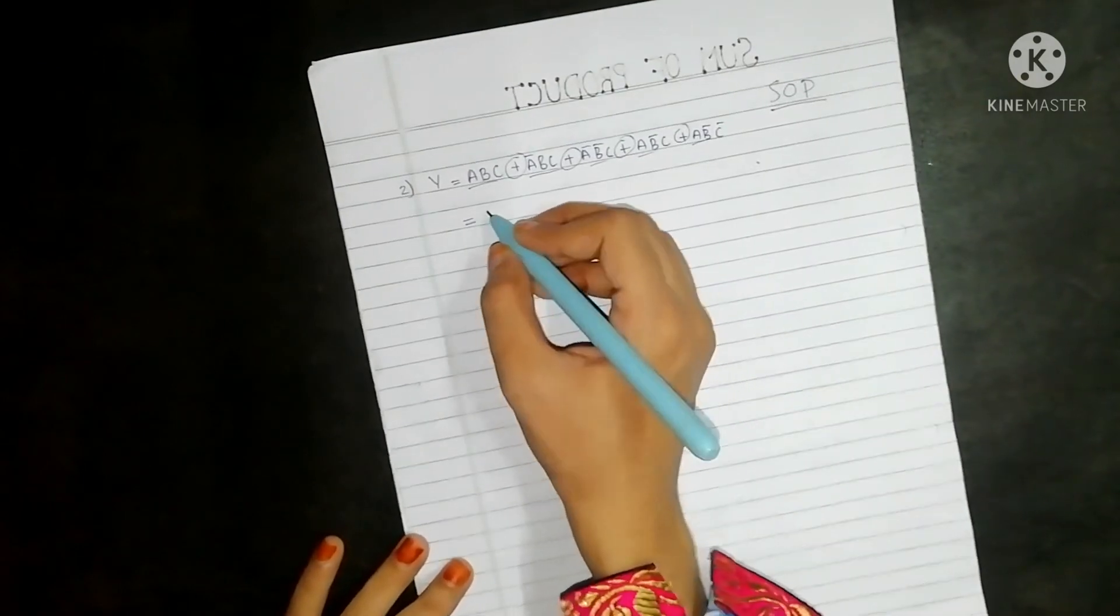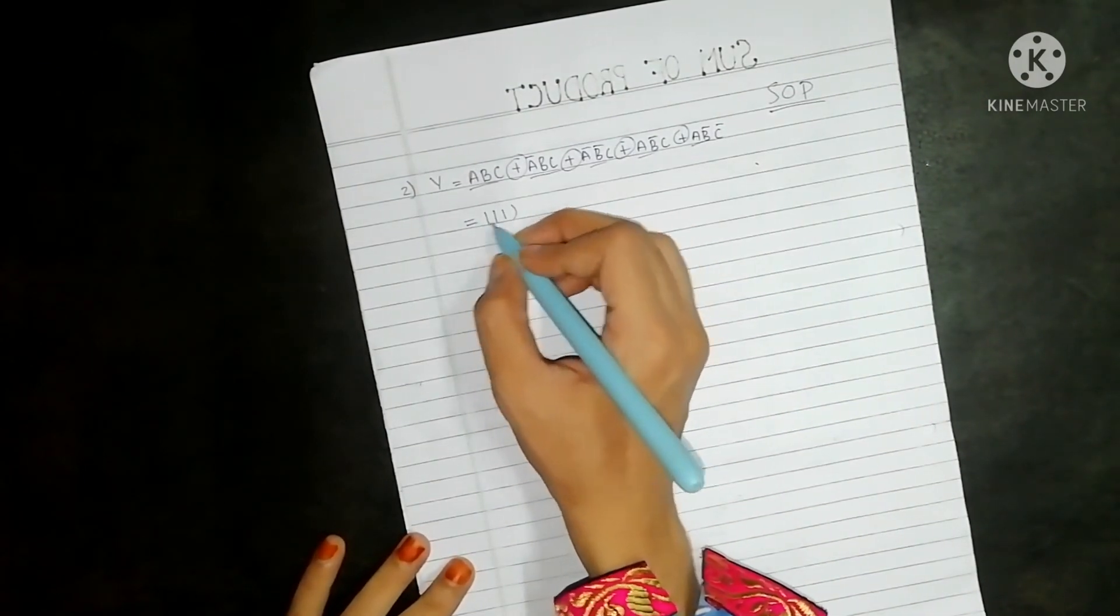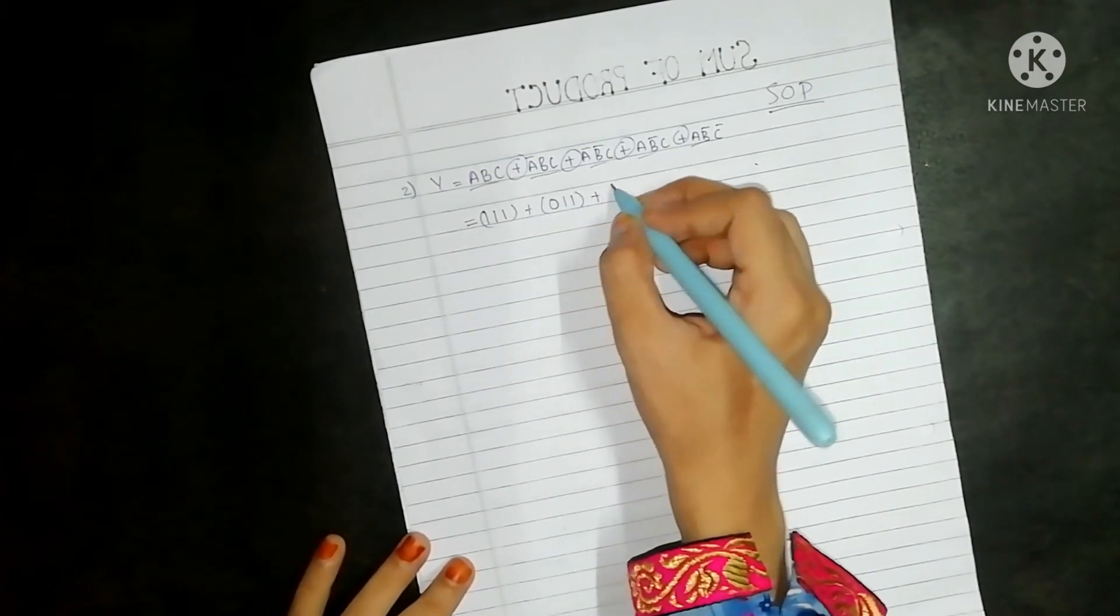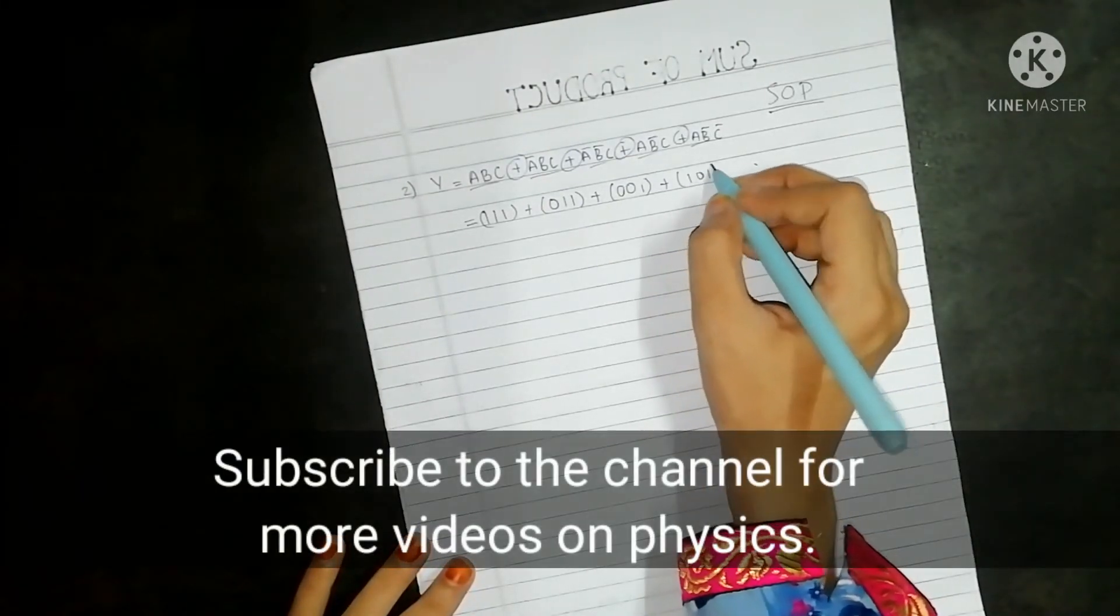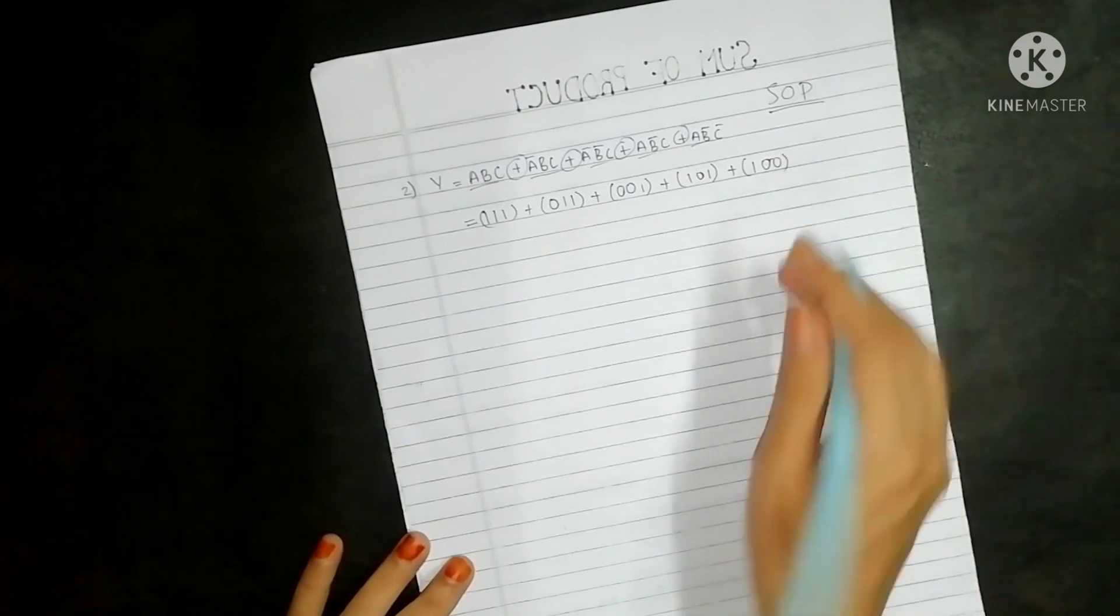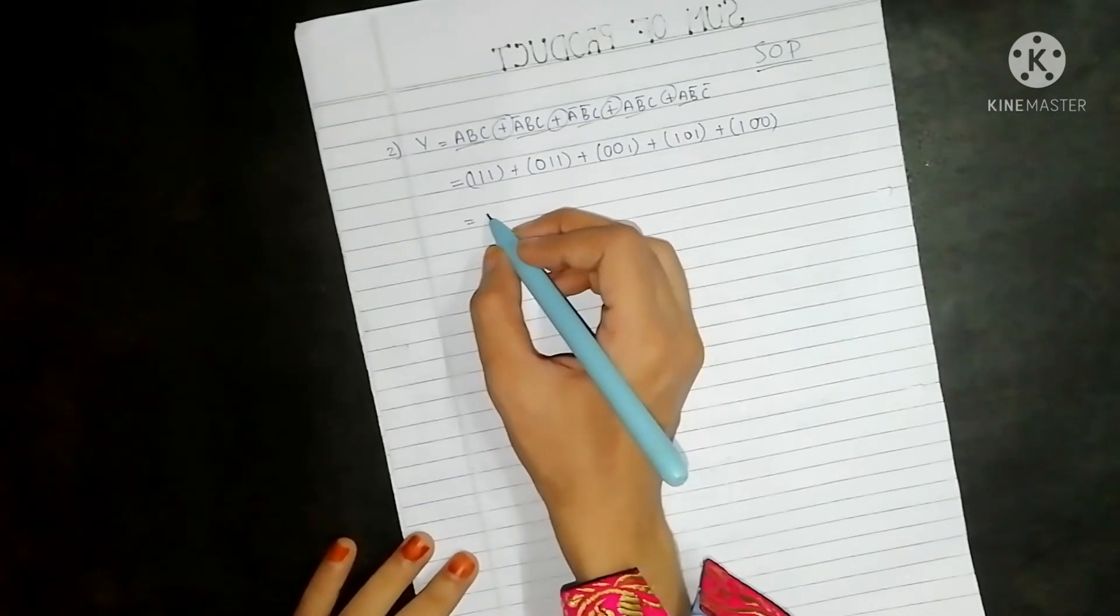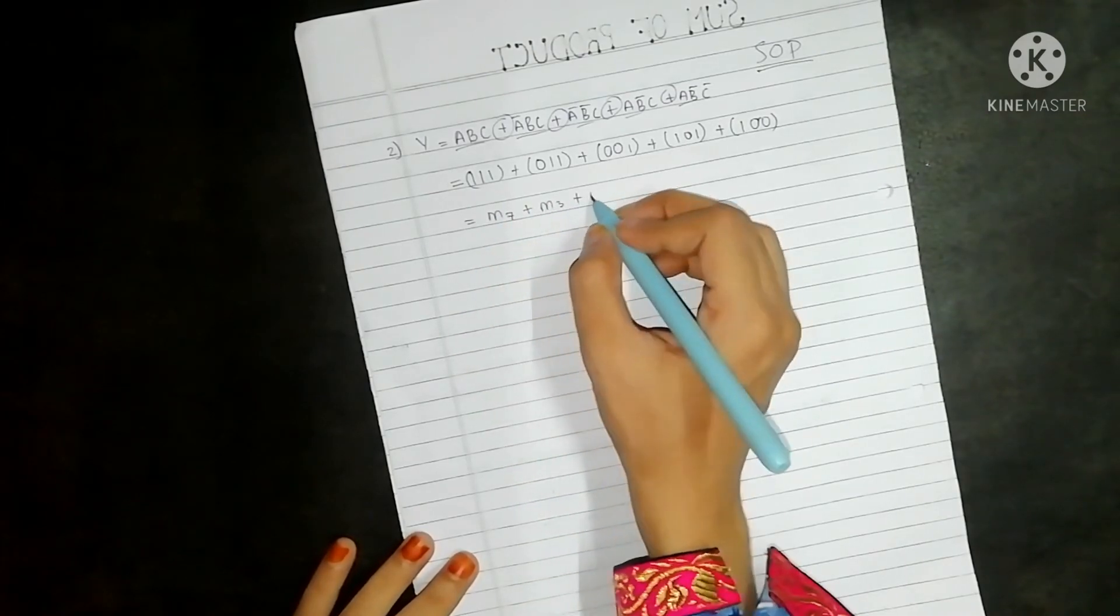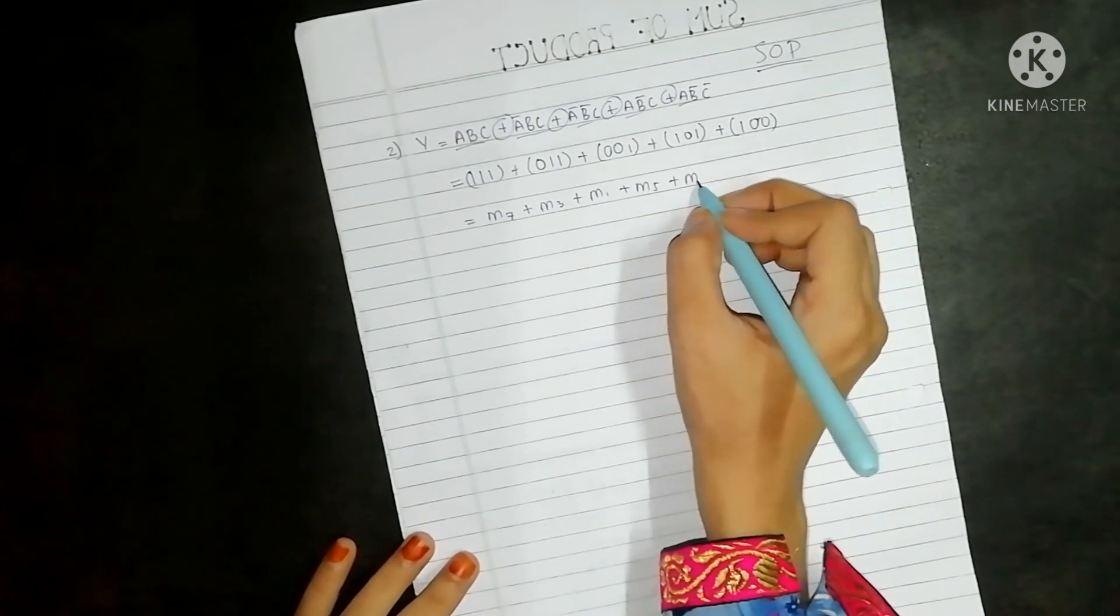We have for uncomplemented 1 and for complemented 0. So 1 1 1 plus 0 1 1 plus 0 0 1 plus 1 0 1 plus 1 0 0. The corresponding notations for min term for these values is m7, m3, m1, m5, and m4.